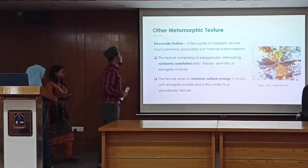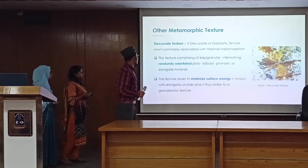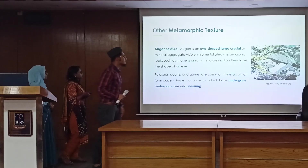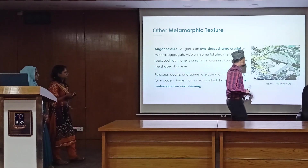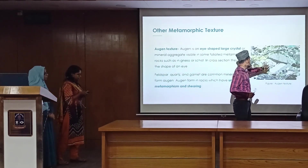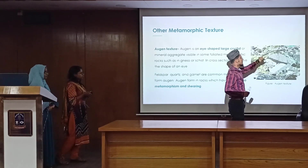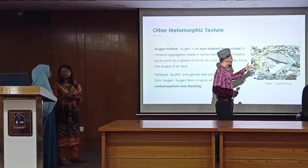Decussate texture, also known as diagnostic texture: equigranular, triple-junction, prismatic minerals are randomly oriented as you can see in the figure. They are oriented to minimize the surface energy. They are also associated with carbonates. In this figure, we can see that mineral aggregates have formed an eye-shaped structure called an augen, formed with the mineral aggregates during shearing.